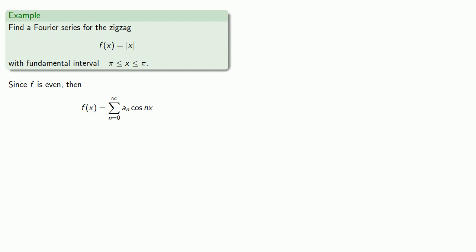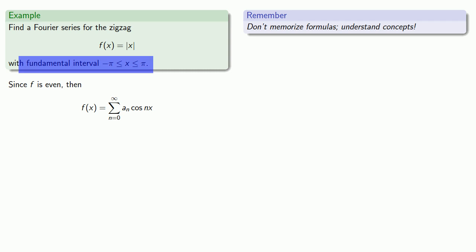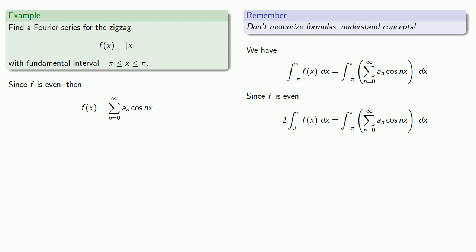Again, it's important to keep in mind: don't memorize formulas, understand concepts. In this case, the thing to remember is that when we integrate a trigonometric function over one complete period, then most of the time, the value is going to be zero. And since the interval from minus π to π includes one complete period of our function, we'll take a look at the integral from minus π to π of our function. We've determined that our function is a Fourier series in cosine, and integrating from minus π to π covers one complete period of cosine. Since f is an even function, this integral from minus π to π is the same as two times the integral from zero to π.